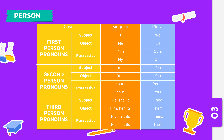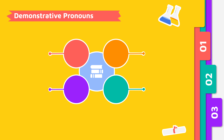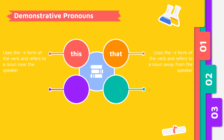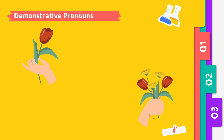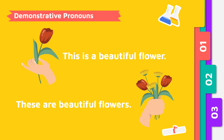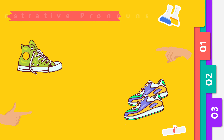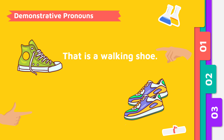Aside from personal pronouns, there are also words used to show others the location of the nouns we are talking about. These are what we call demonstrative pronouns. Examples of which are: this, these, that, and those. This is a beautiful flower. These are beautiful flowers. That is a walking shoe. Those are running shoes.